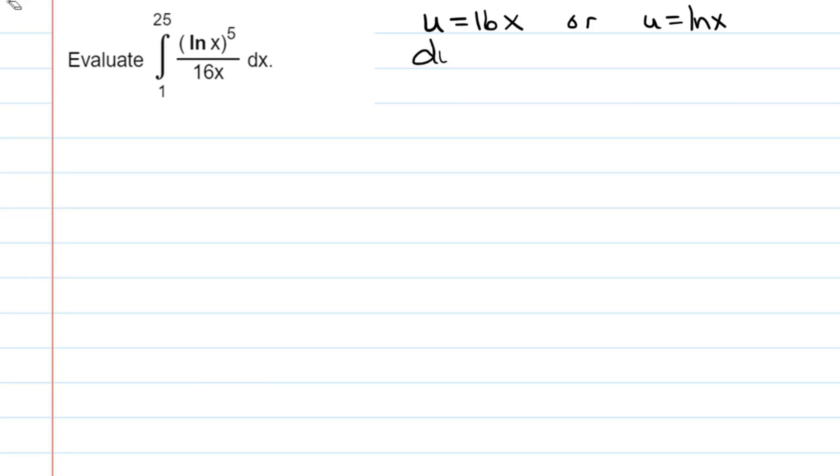I don't think U equals 16x is going to be real helpful here, because du would be 16 dx. And that would not give me any way to substitute U's in for natural log of x to the fifth. And it's not going to simplify my expression. So instead, I'm going to try the other. And don't be afraid to try multiple U substitutions until you find something that works.